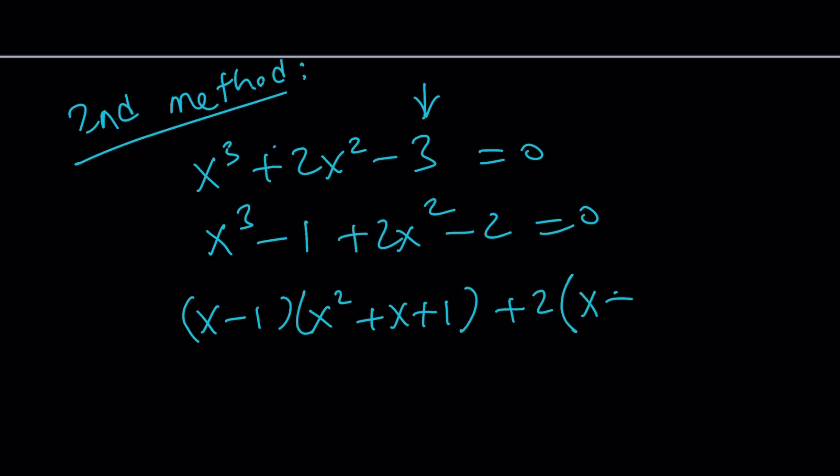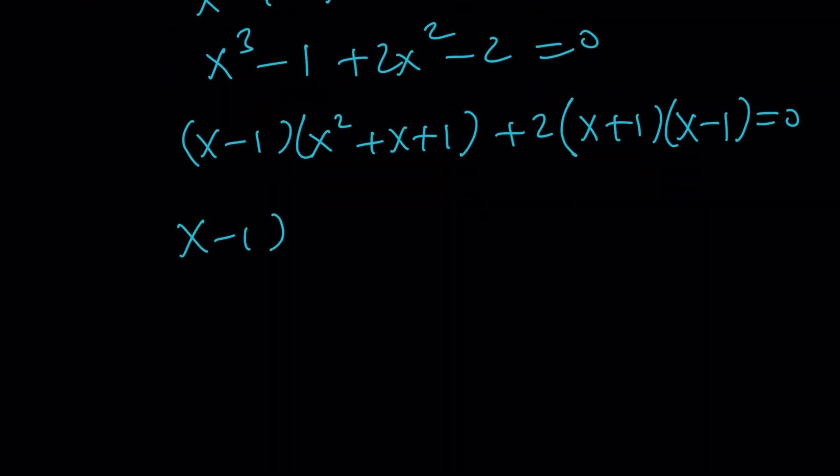2 times x squared minus 1, again, that's going to be difference of 2 squares. And now we have x minus 1 again, but this gives us x squared plus x plus 1, plus, now I've got to distribute the 2 over, 2x plus 2 equals 0.